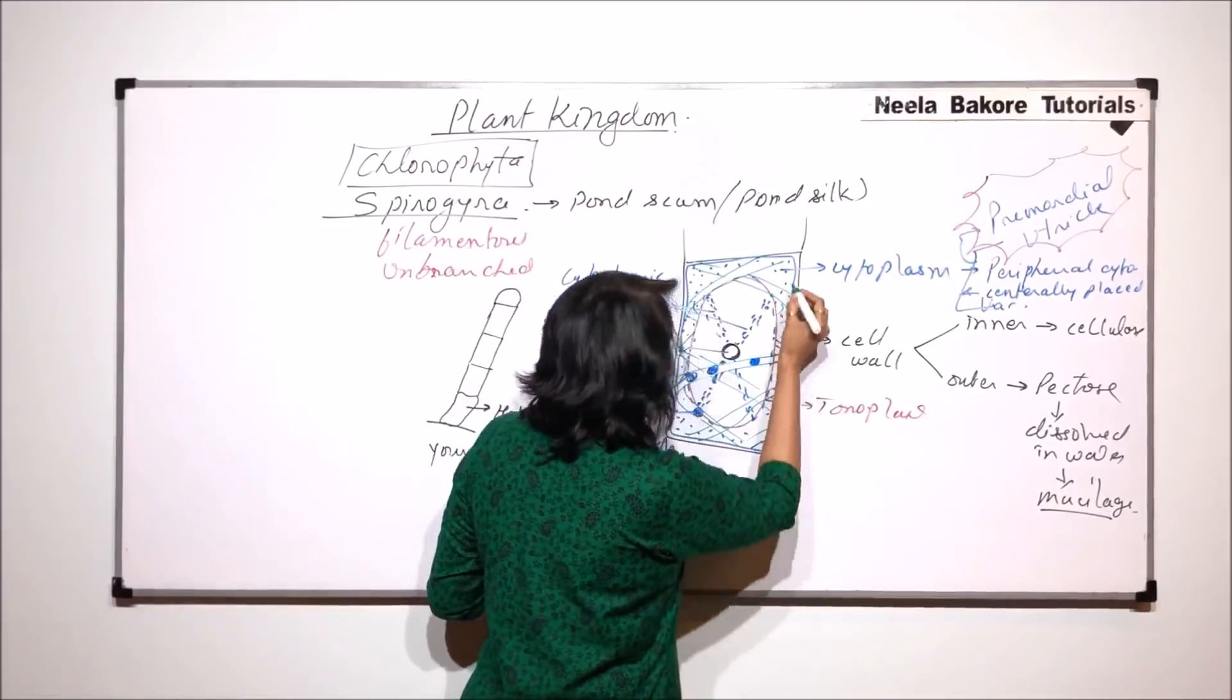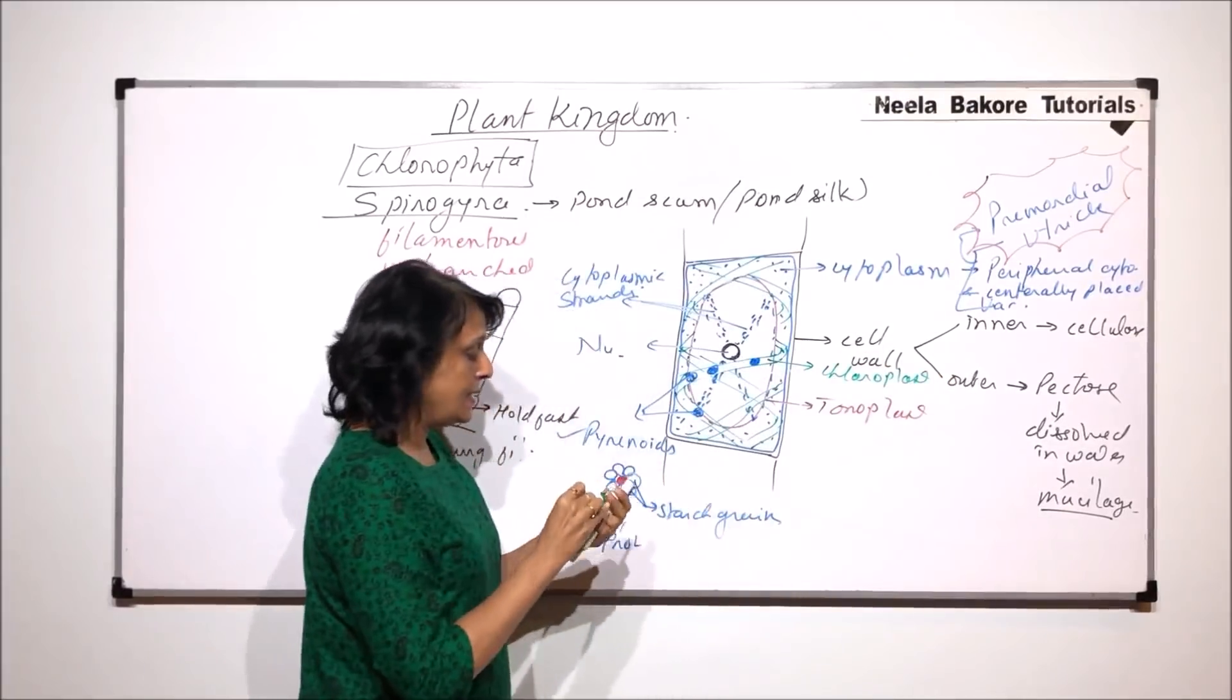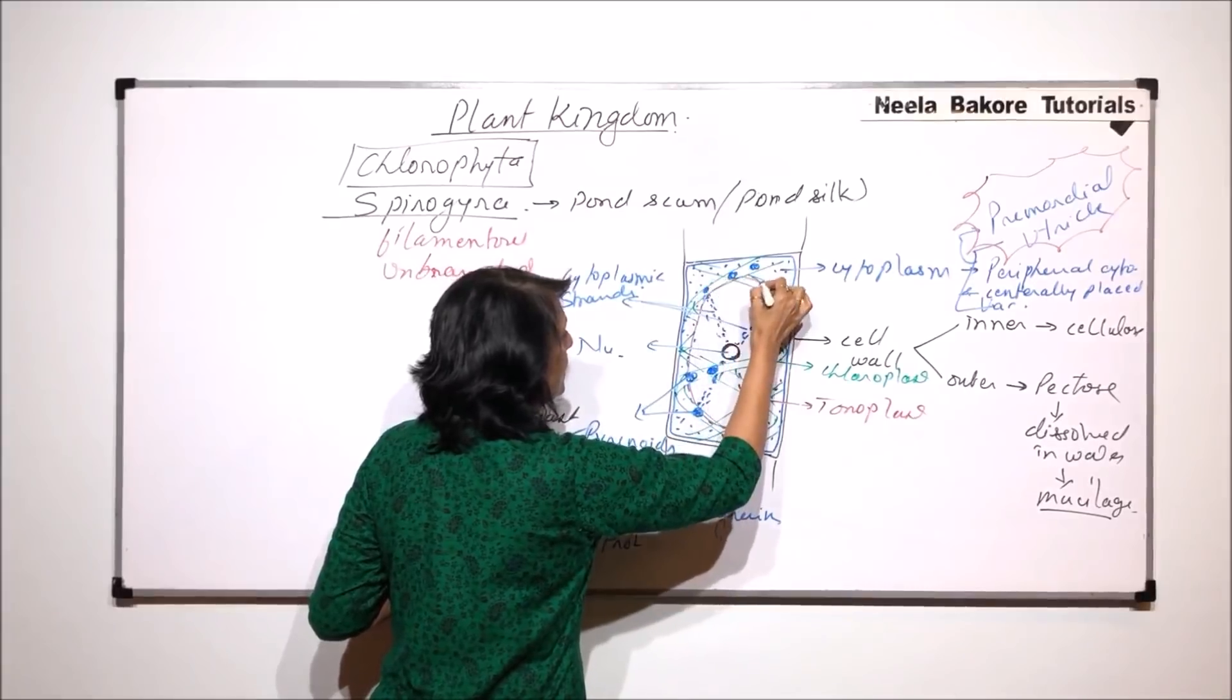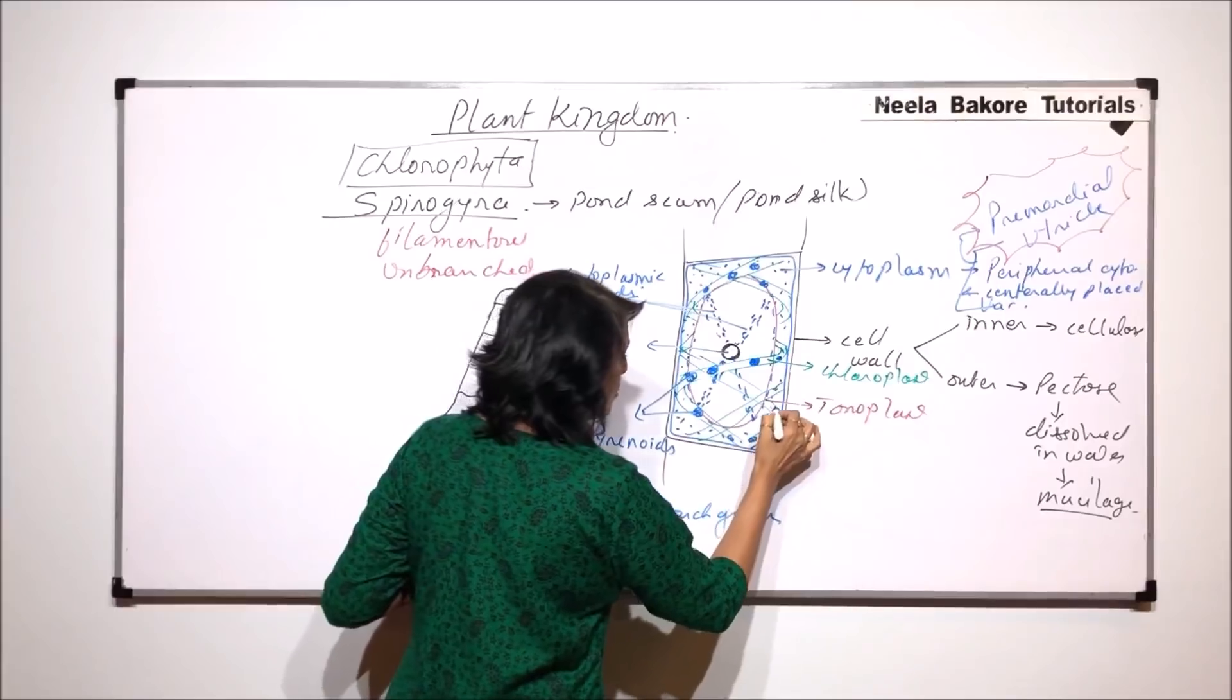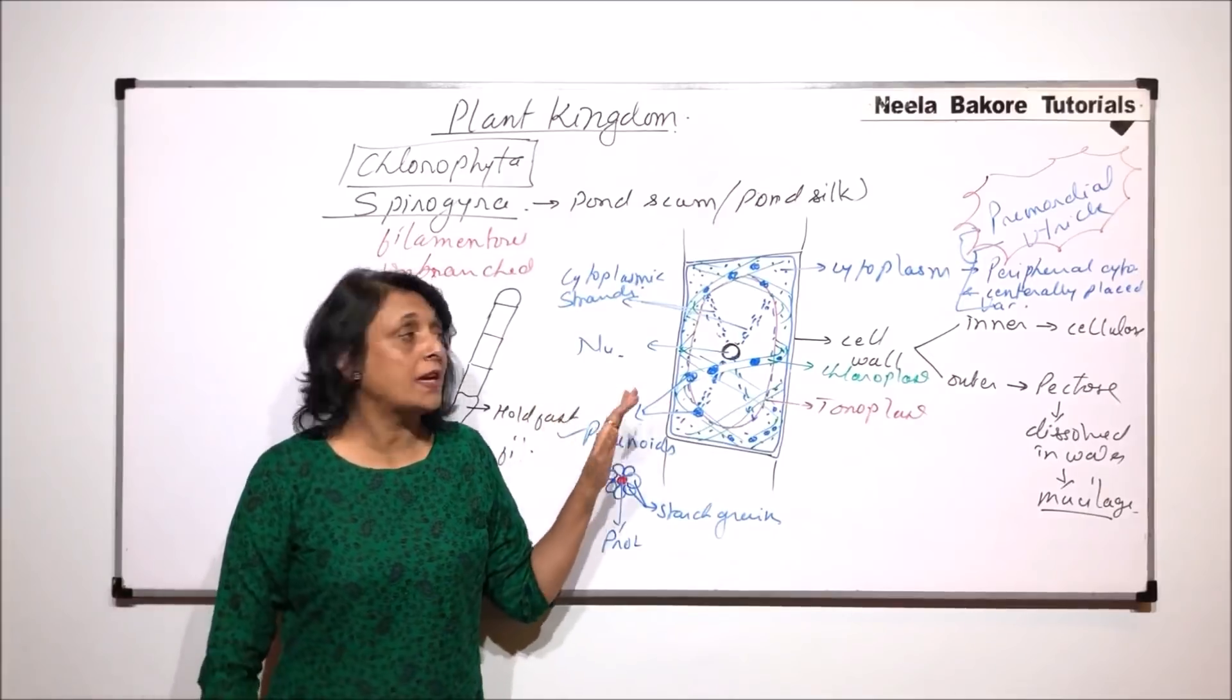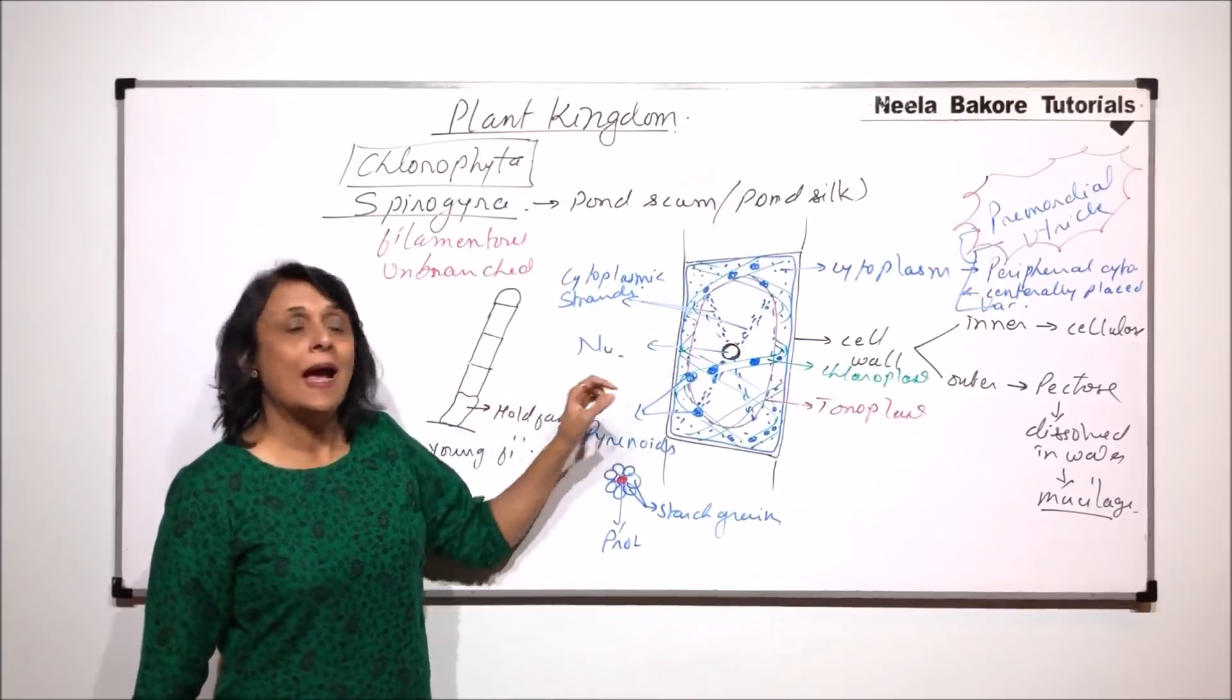There are many chloroplasts and embedded in these chloroplasts are present many pyrenoids. Let us label this structure. The green one here is chloroplast and there are many pyrenoids. This is the reserved food material for the alga. Structure-wise, it is simple.